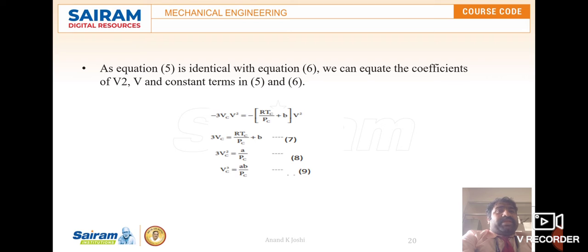Comparing coefficients gives us three equations: equation 7: 3Vc = RTc/Pc + b; equation 8: 3Vc² = a/Pc; and equation 9: Vc³ = ab/Pc. These are the three corresponding equations numbered 7, 8, and 9.